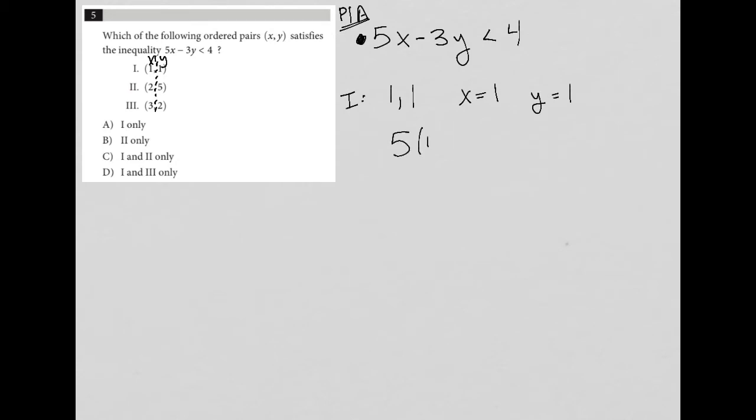I'm going to plug in 1 instead of x, so instead of 5x, I have 5 times 1 minus 3 times 1. Instead of 3y, is less than 4. This is 5, and 5 minus 3 is less than 4. And yes, in fact, 2 is less than 4.